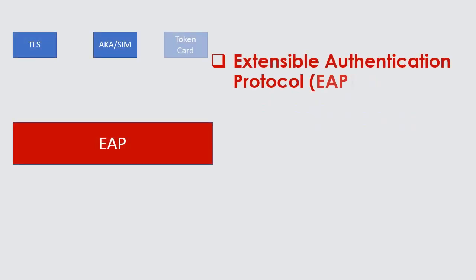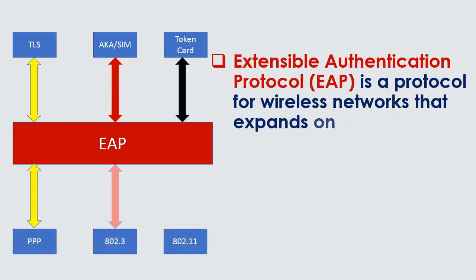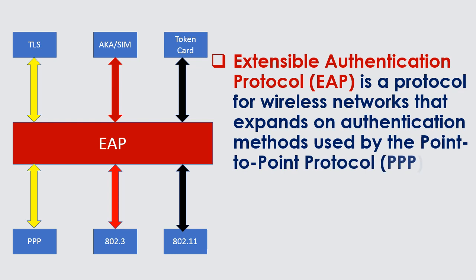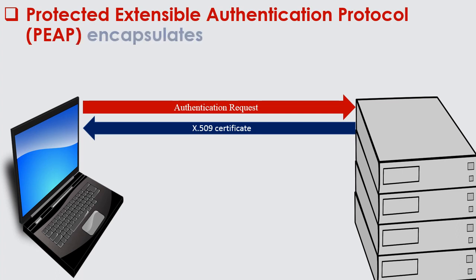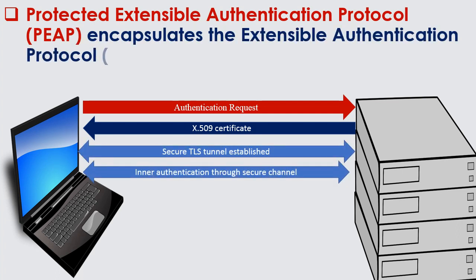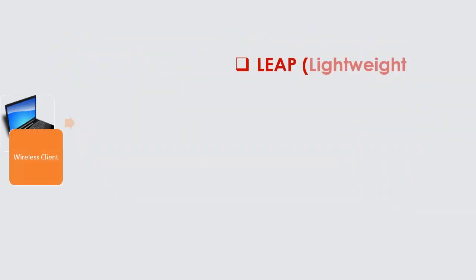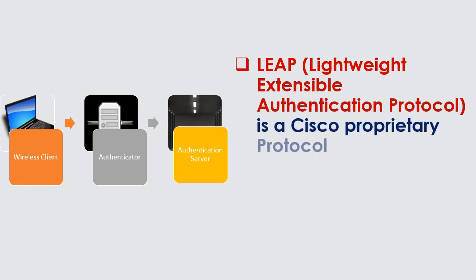Extensible Authentication Protocol, EAP, is a protocol for wireless networks that expands on authentication methods used by the Point-to-Point Protocol, PPP. Protected Extensible Authentication Protocol, PEAP, encapsulates EAP within an encrypted and authenticated Transport Layer Security, TLS, tunnel. LEAP, Lightweight Extensible Authentication Protocol, is a Cisco proprietary protocol.